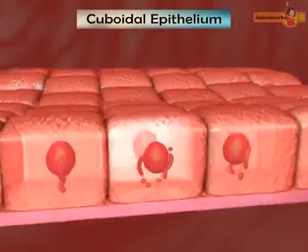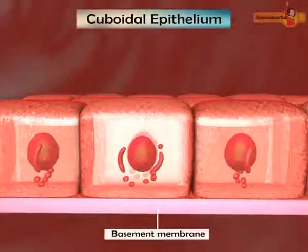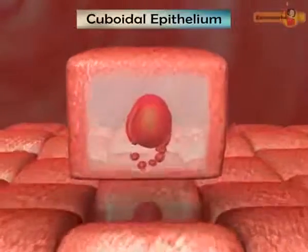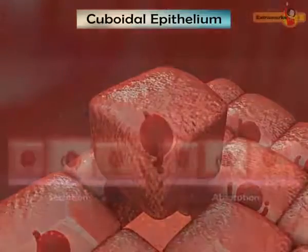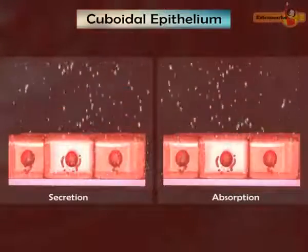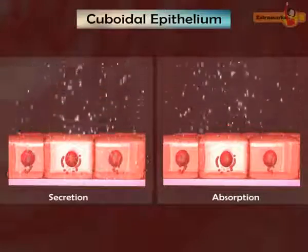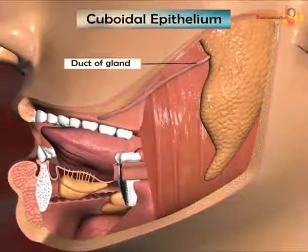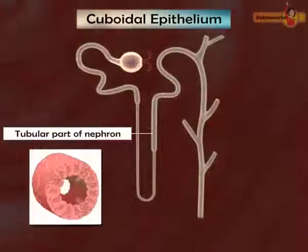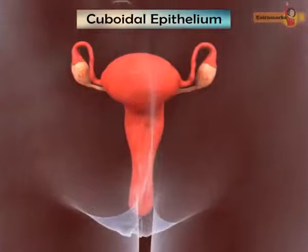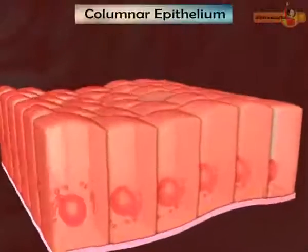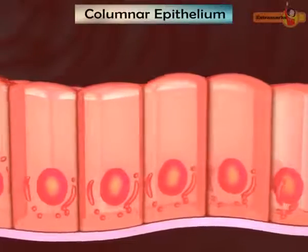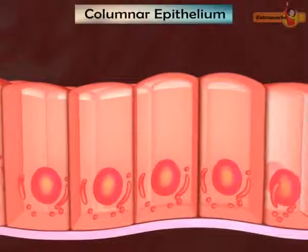Cuboidal epithelium is composed of a single layer of cube-shaped cells resting on the basement membrane with a large central nucleus. Cuboidal epithelium facilitates secretion and absorption; therefore, it is commonly found in the ducts of glands, tubular parts of nephrons, and surface of the ovary.